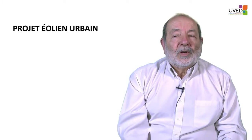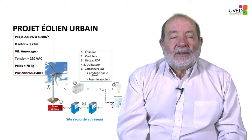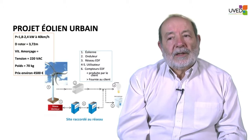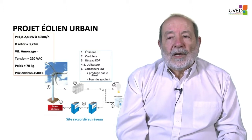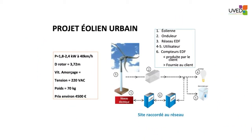If the site is connected to the grid, the energy recovered by the windmill is first rectified, sent through a DC bus, and then injected into the electric grid. When the windmill is not rotating, the user can draw power from the normal grid — which is why there are two different electrical power meters. Here we have a windmill producing between 1.8 and 2.4 kilowatts at 40 kilometers per hour with a rotor of almost four meters in diameter.